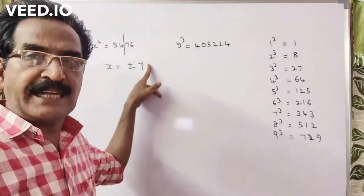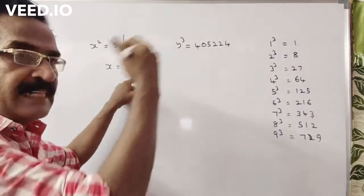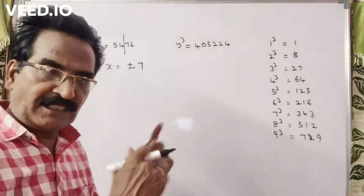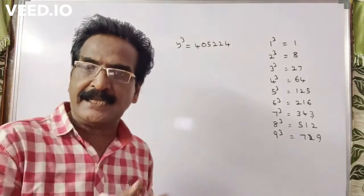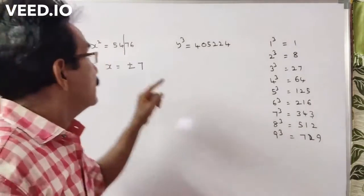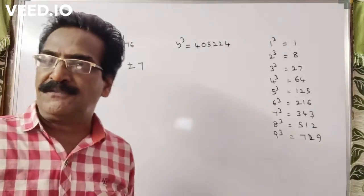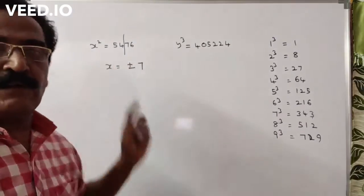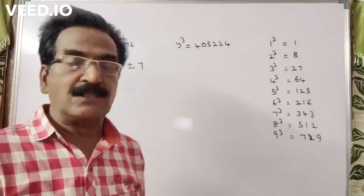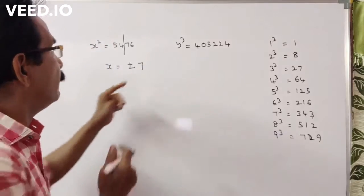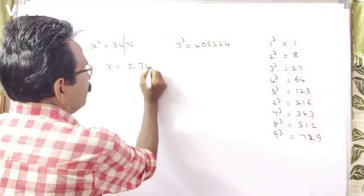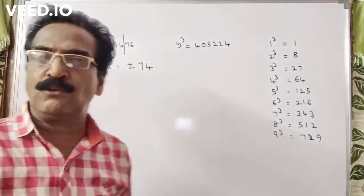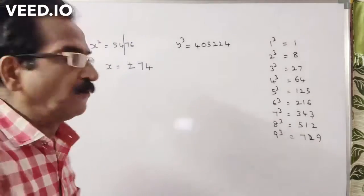How to decide between 4 or 6? You have to multiply 7 with the next immediate higher number. 7 eights are 56. Here 54 is less than 56, so you have to take 4. Now you got the value of x: x is equal to plus or minus 74.